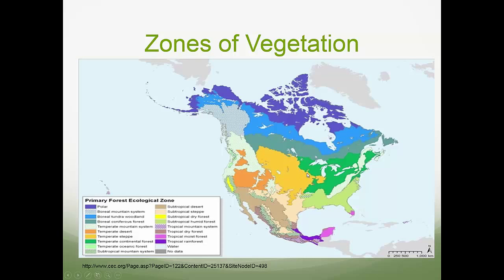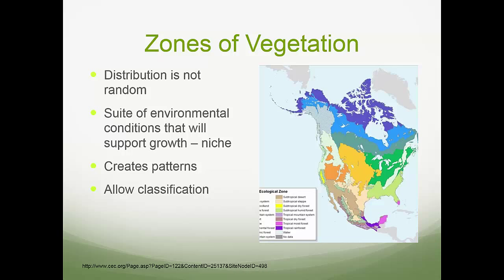In Minnesota and the Lake States, we're mostly in that green temperate continental forest, with perhaps a little bit of the yellow zone as well. These are broad landscape classifications. The distribution of these zones is not random — there's an underlying suite of environmental conditions that support growth. This is often considered the niche: an all-encompassing matrix of environmental conditions that will support growth.